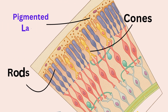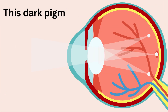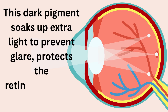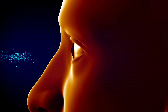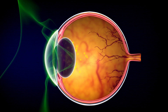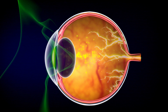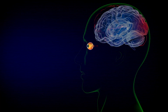Just behind the retina lies the pigmented layer loaded with melanin. This dark pigment soaks up extra light to prevent glare, protects the retina, and keeps your vision sharp and clear. The rods and cone cells convert light into electrical signals, which the optic nerve carries to your brain's occipital lobe, where visuals are processed.